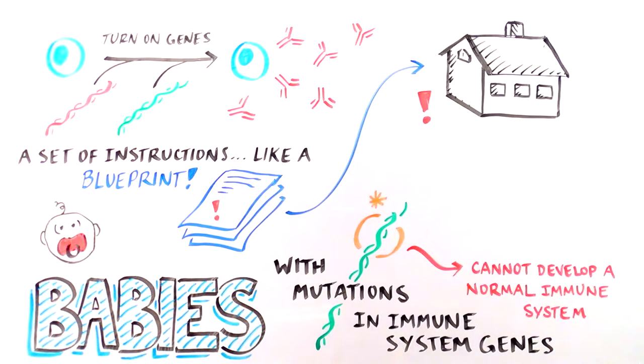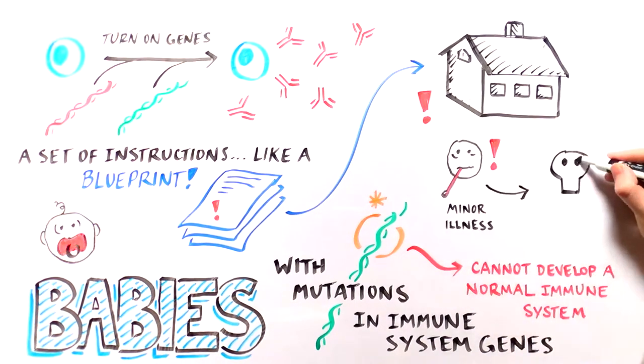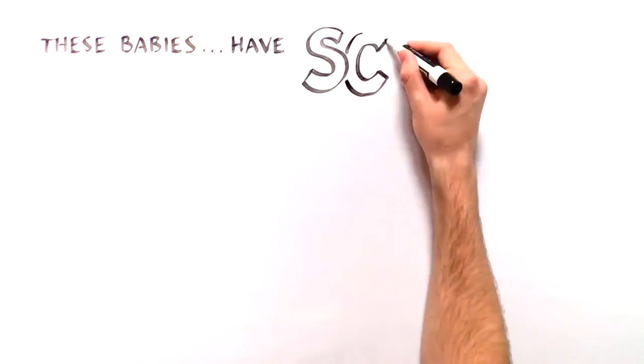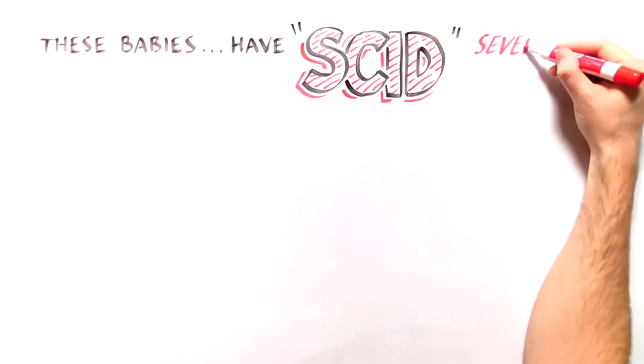Because their immune cells cannot fight off foreign invaders, even minor infections can be deadly. These babies have what is called severe combined immunodeficiency, or SCID.